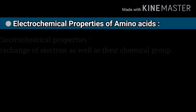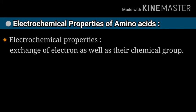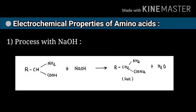Now I am talking about the second topic: electrochemical properties of amino acids. Electrochemical properties here means the exchange of electrons as well as their chemical groups. Let us discuss the first property — reaction with NaOH (sodium hydroxide).